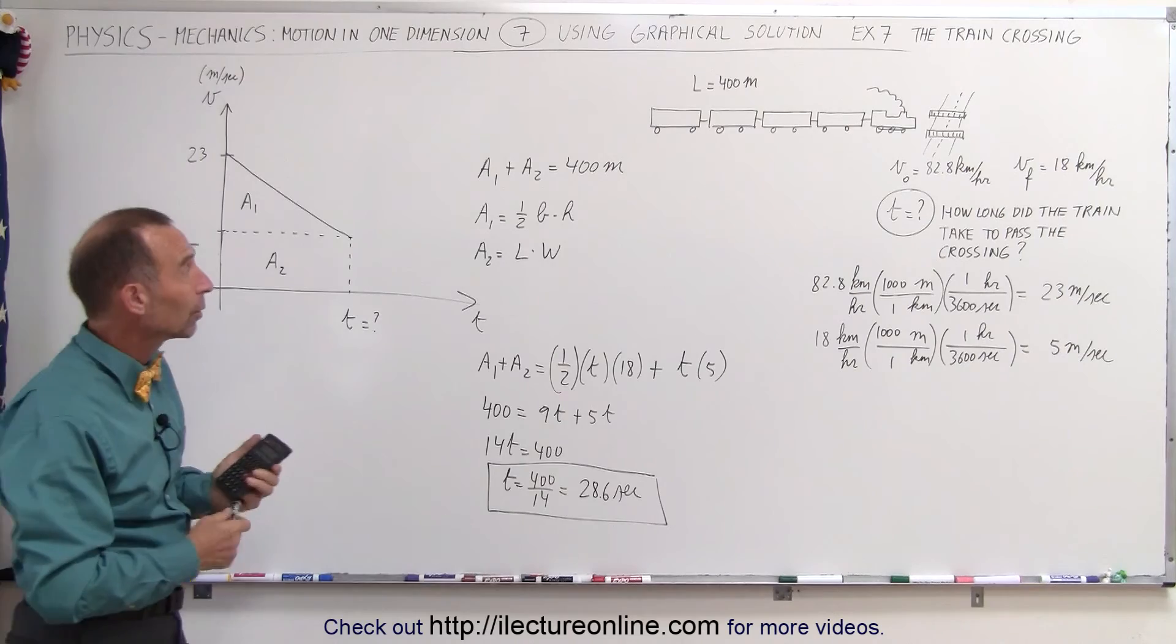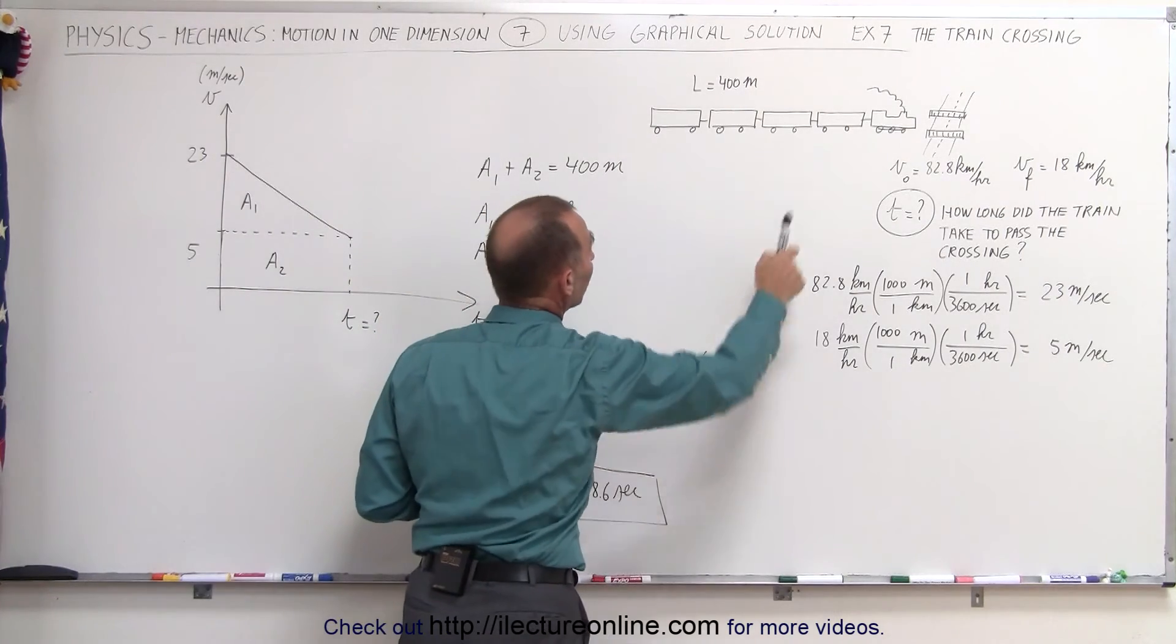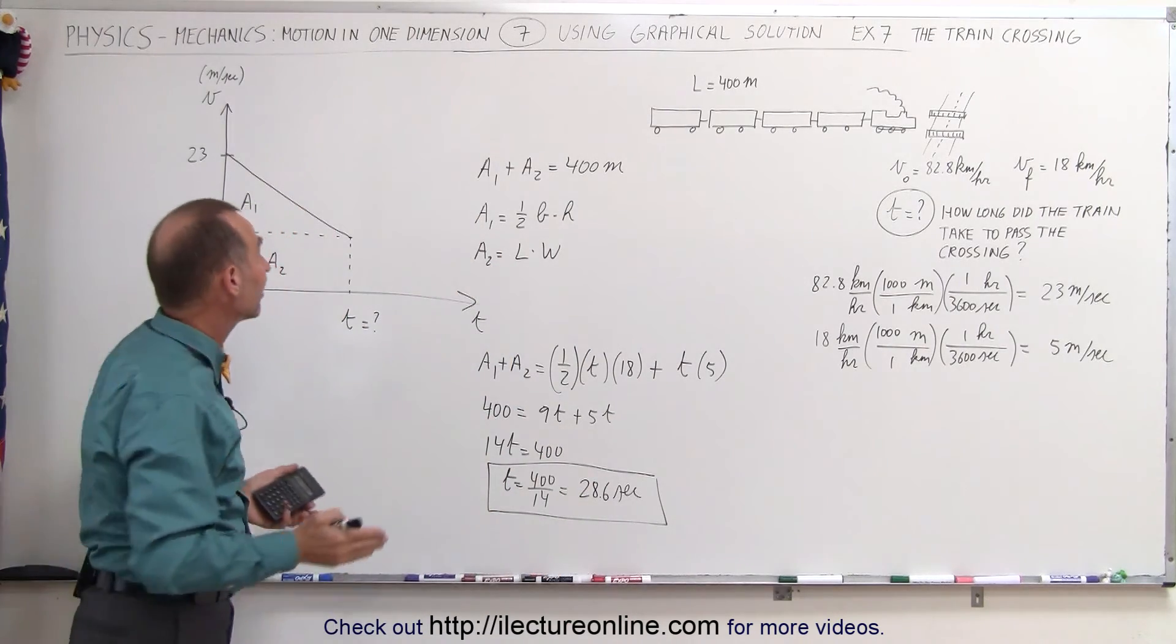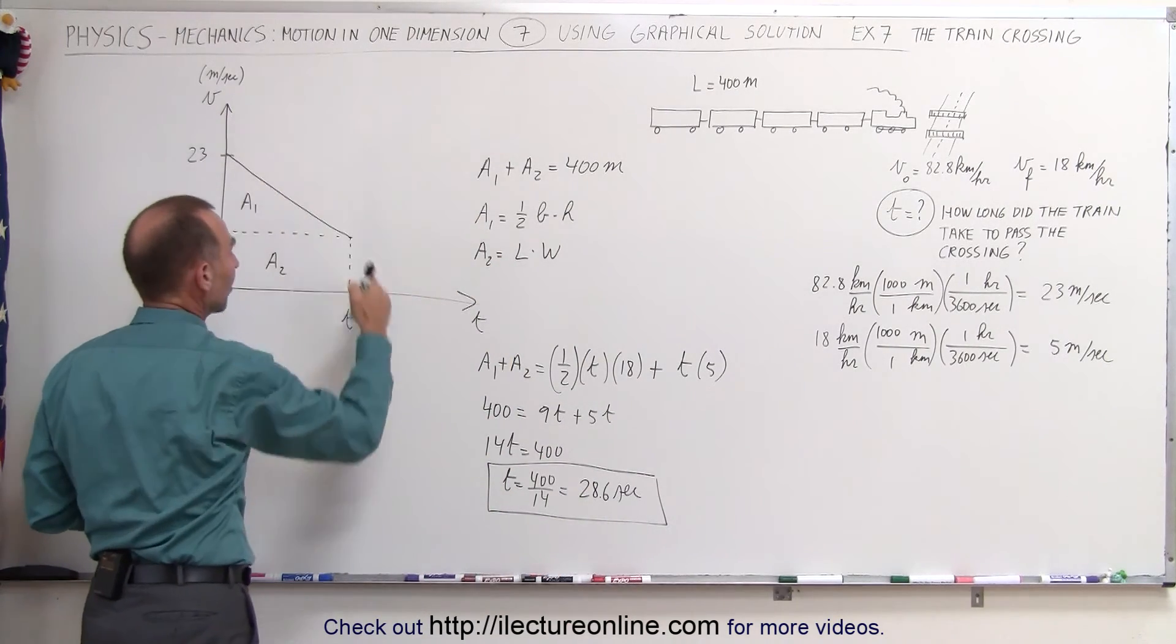Again, it's pretty straightforward. We were given the length of the train, so we're given distance. We know the beginning and the end velocity, we convert that to meters per second, that makes sense then, that we draw a velocity versus time graph.